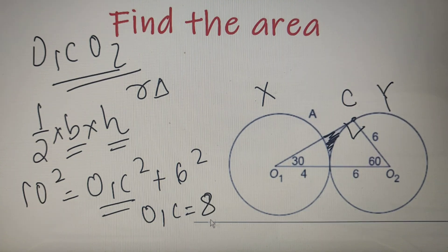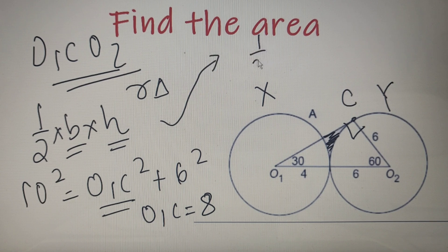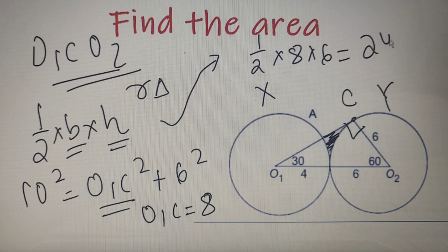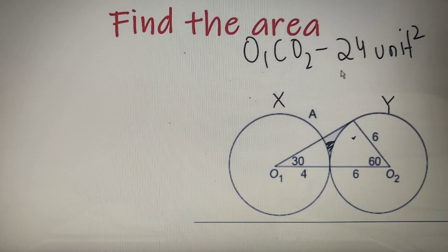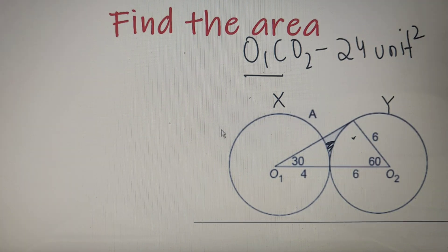After we have got the length of side O1C as 8 units, we will simply put it in this formula and we'll get our area as half into 8 into 6, which is equal to 24 units square. So now we have found the area of the triangle and it has come out to be 24 units square. And now we have to only find the area of these two sectors which are present in circles X and Y respectively.